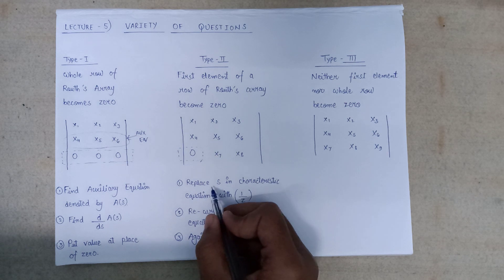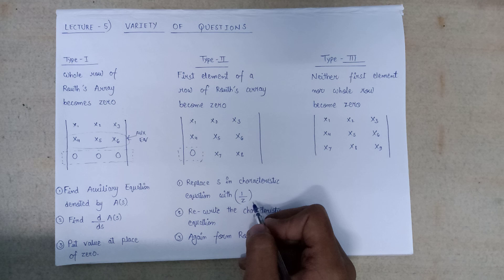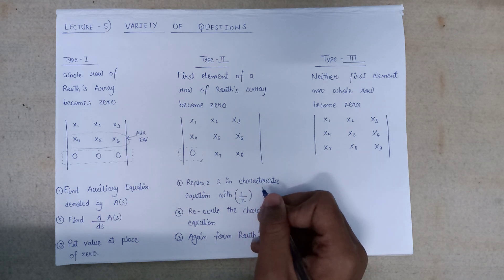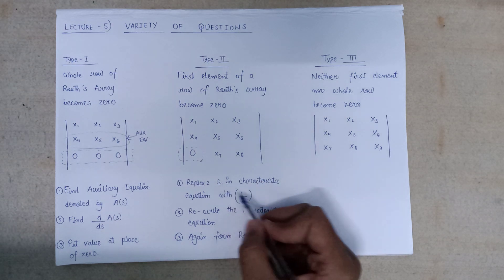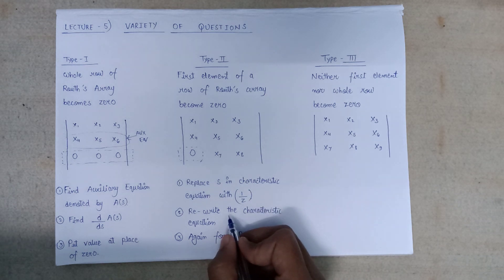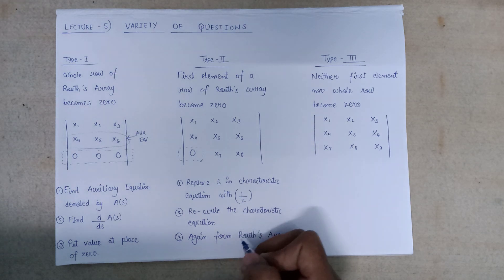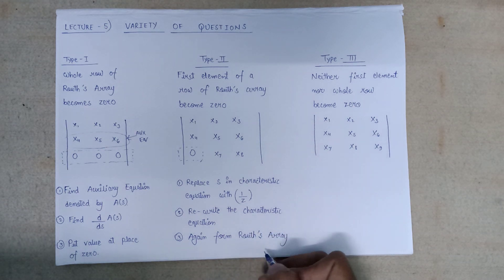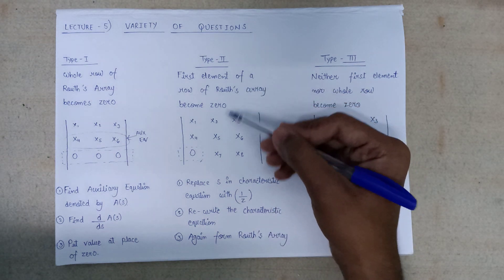We have to first replace s in the characteristic equation with 1/z. Since the characteristic equation is always given as a function of s in the Laplace domain, we have to replace s with 1/z. After that, we will take the LCM and rewrite the characteristic equation. After rewriting the characteristic equation, we will again form a Routh array and solve it easily. In this way, we deal with Type 2 questions.